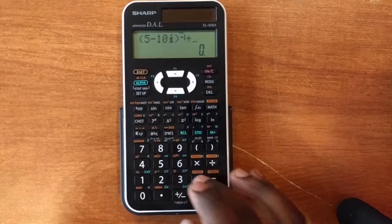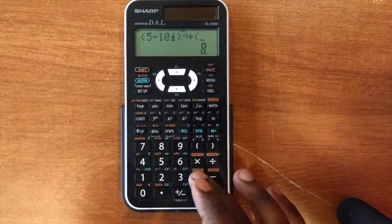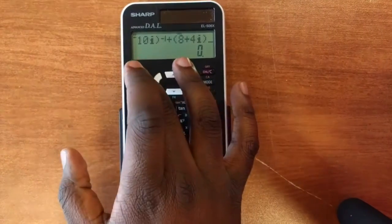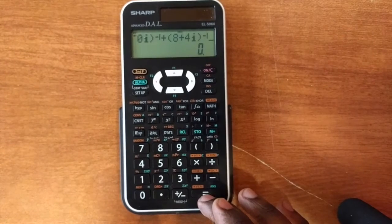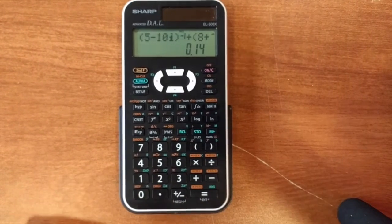And we add that to 8 plus 4J. And we flip that as well. Pressing the equal sign will give us that value, which is 0.14.